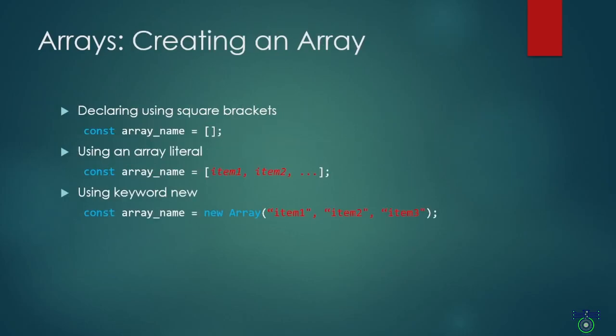Let's see how we can create an array. We can create an array by declaring it using square brackets. Another way is using an array literal — when you write const, you declare an array, and within the brackets you can define your elements. The third way is using the keyword new. You write const, the array name, equals new — that is the keyword — then the constructor method Array, and within the brackets you define your elements. So those are the three ways to create an array.